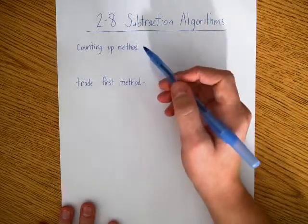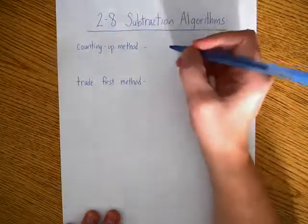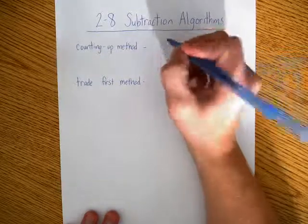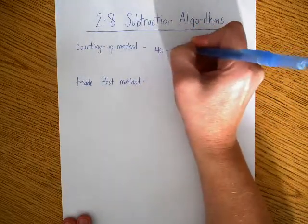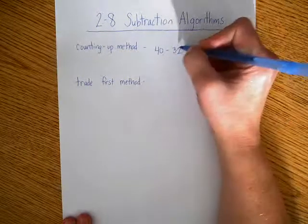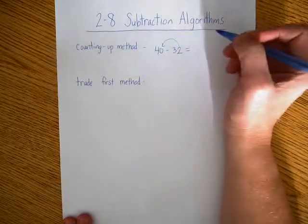The first way we're going to talk about is the counting up method. So for the counting up method, let's just use something simple, 40 minus 32 equals how many? I can count up from 32 to 40 and see how many is in between there.